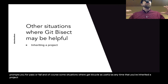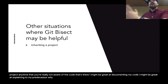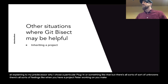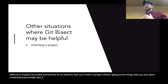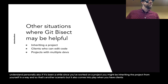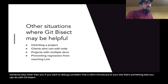Some situations where git bisect is useful: anytime you've inherited a project and aren't fully aware of the code that's there. You might be great at documenting your code, but there are all sorts of unknowns. There are feelings when working on a project where you make decisions for reasons that are difficult to explain or articulate. Anytime you inherit a project there are things you just won't understand — and personally, if it's been a while since you worked on a project, you might be inheriting it from yourself. It also comes into play when clients are changing code and you want to debug a problem they introduced.